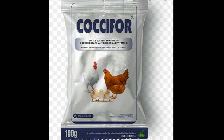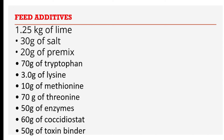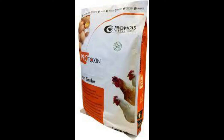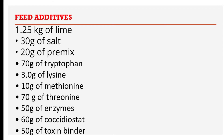Add 60 grams of coccidiostat. Coccidiostat is very important in poultry feed — it is used to retard the growth and reproduction of coccidian parasites, making the feed safer and healthier for poultry. You must also add 50 grams of toxin binder, which is used to neutralize harmful chemicals or toxins in the feed that may be harmful to the birds. That completes the chick mash formulation.